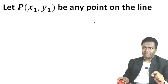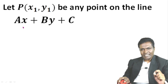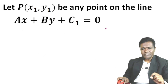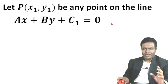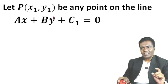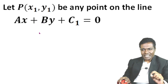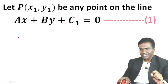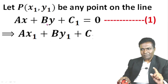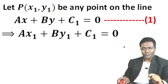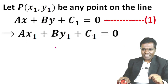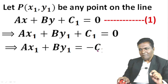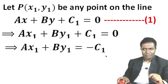Let P(x1, y1) be any point on the line ax plus by plus c1 equal to zero. Since the point lies on this line, it must satisfy the equation — substituting x1 for x and y1 for y. So this implies ax1 plus by1 plus c1 equal to zero, which gives us ax1 plus by1 equal to minus c1. Call this equation (1).